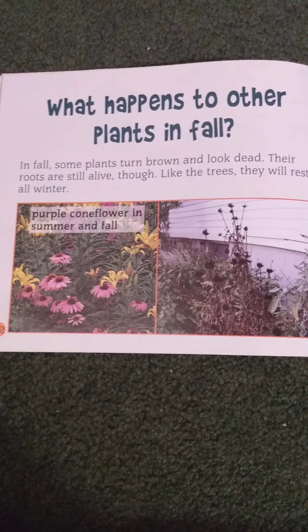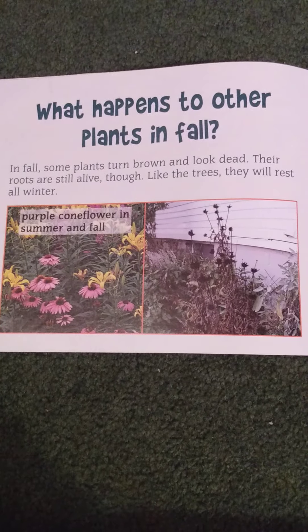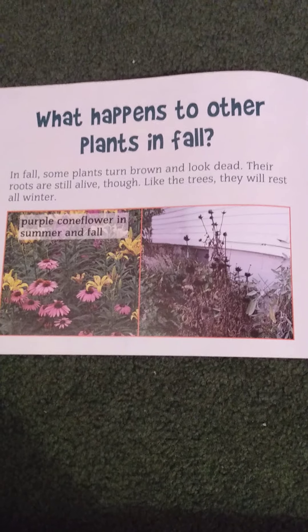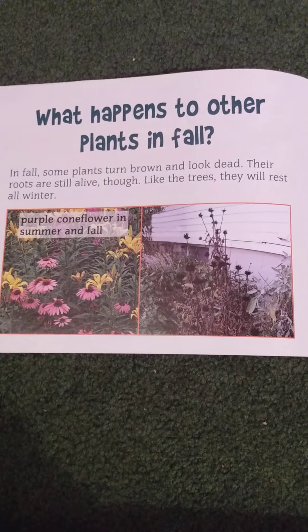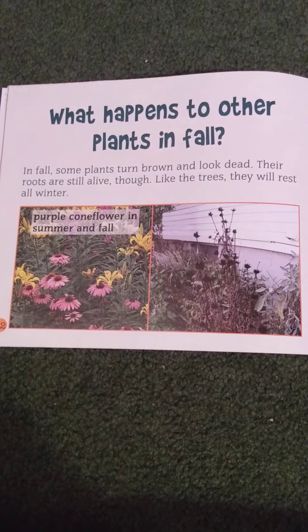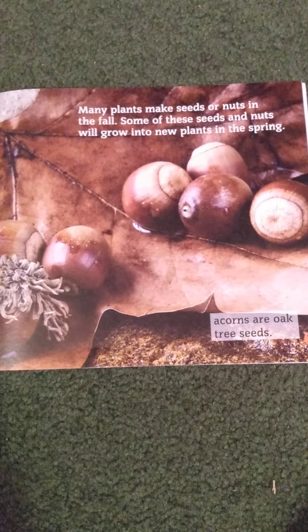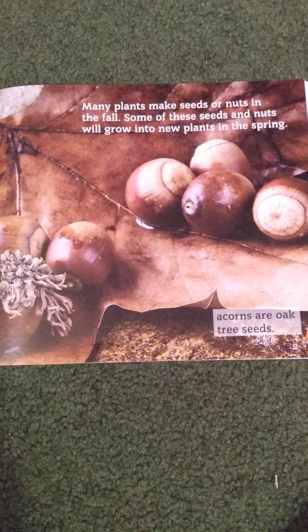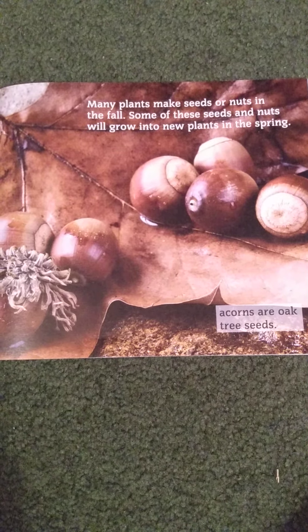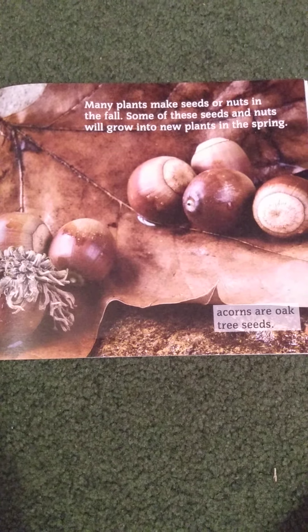What happens to other plants in fall? In fall, some plants turn brown and look dead. Their roots are still alive, though. Like the trees, they will rest all winter. Purple coneflowers bloom in the summer and then change in the fall. Many plants make seeds or nuts in the fall. Some of these seeds and nuts will grow into new plants in the spring. These are acorns, or oak tree seeds.